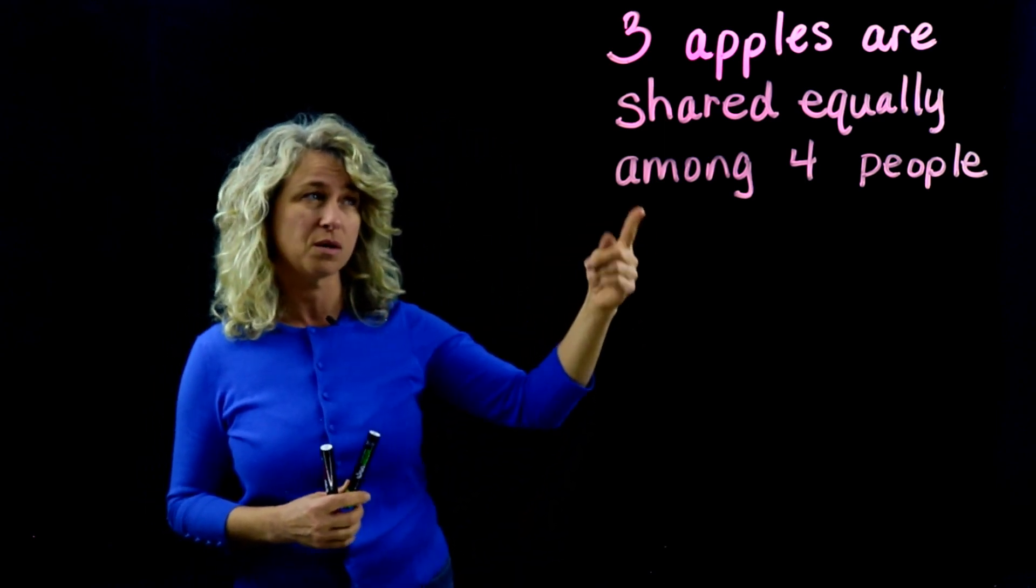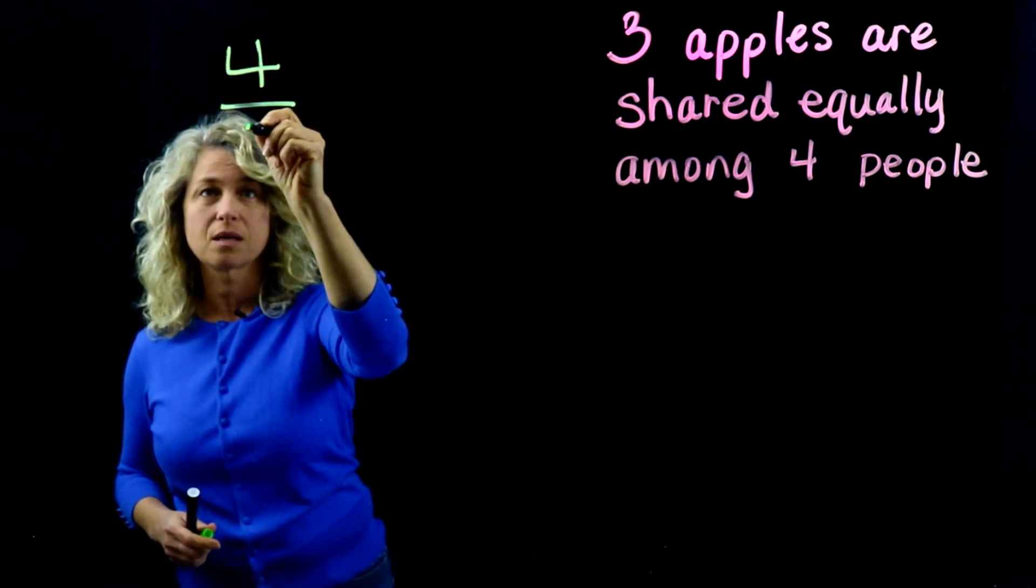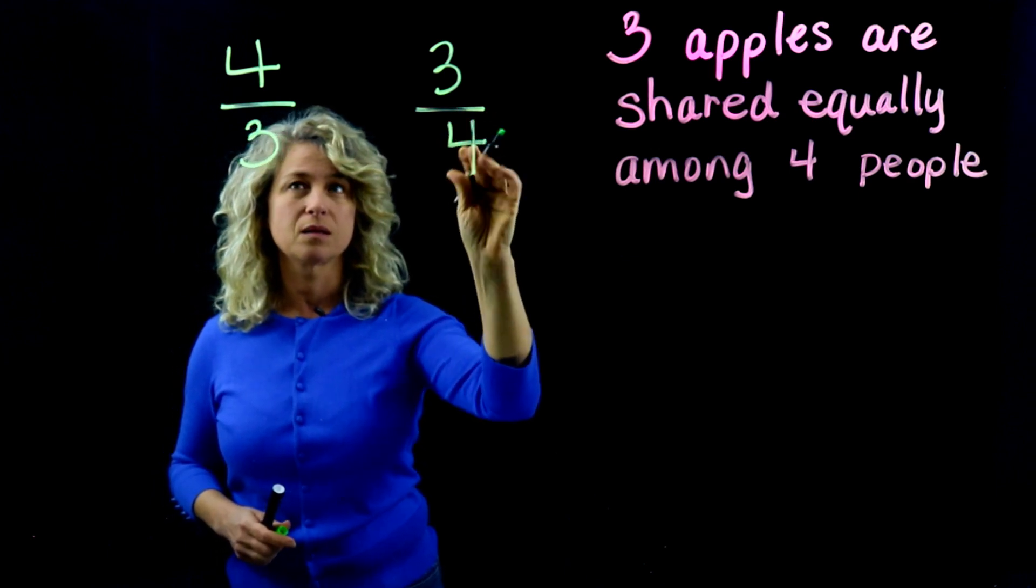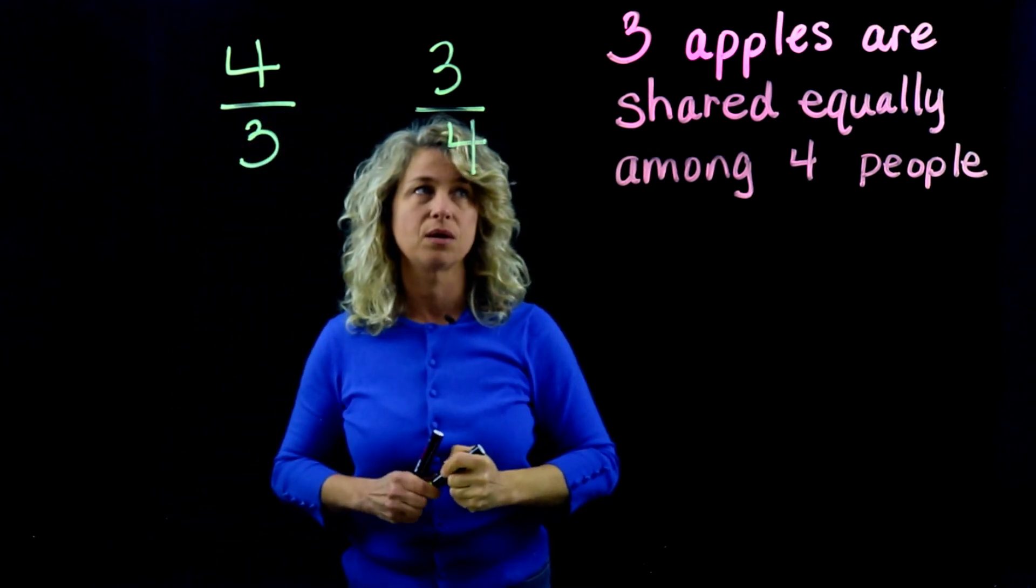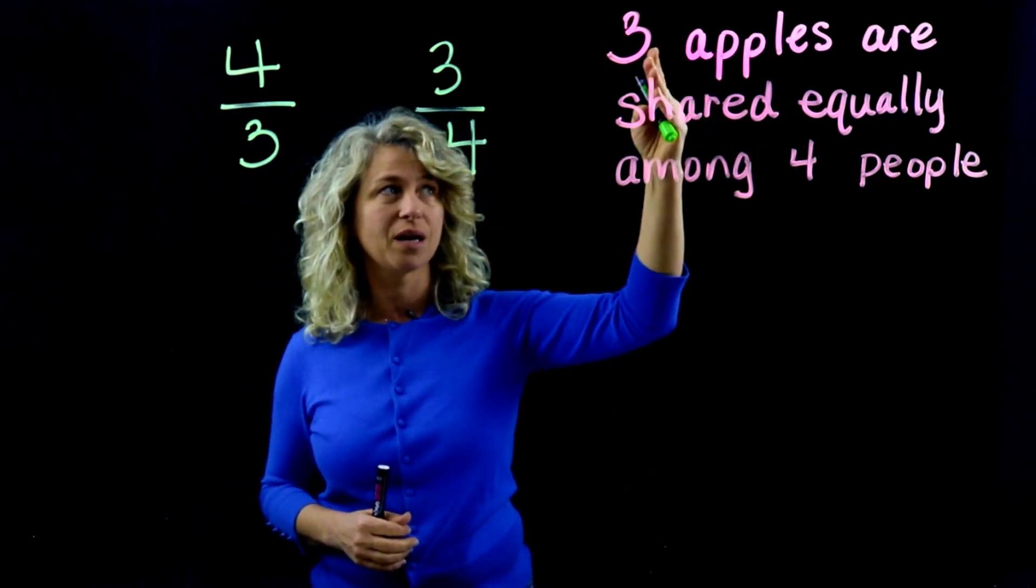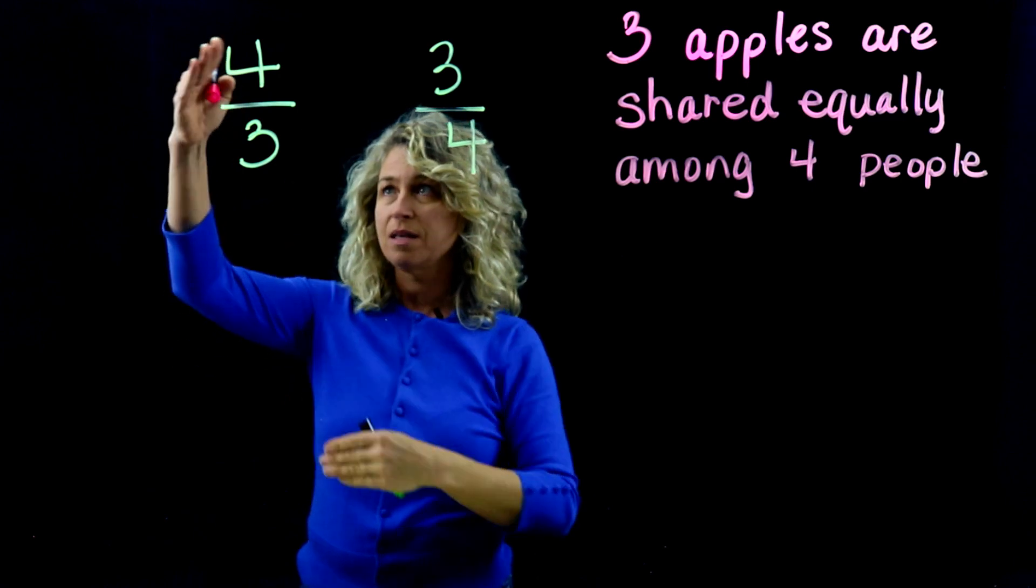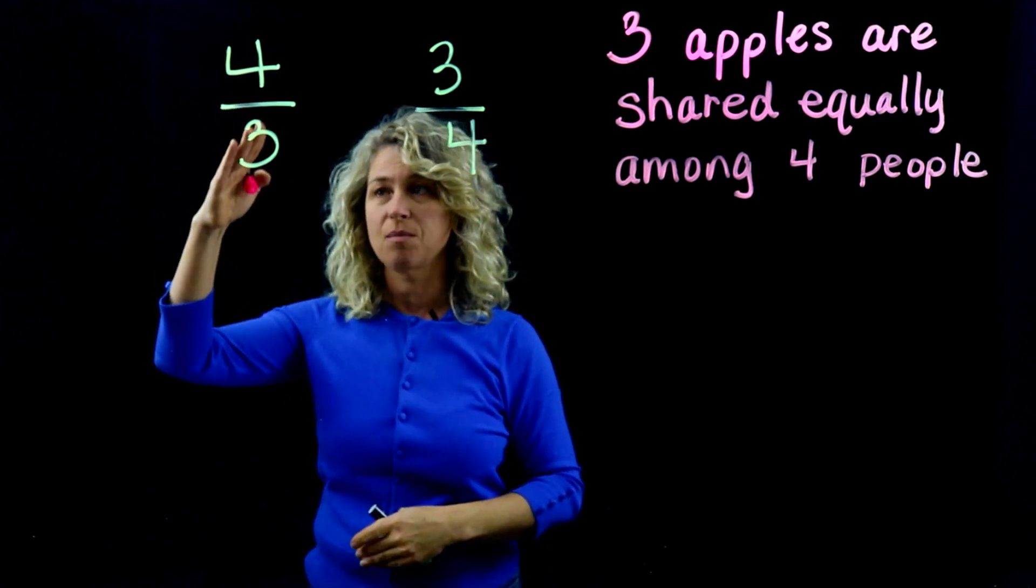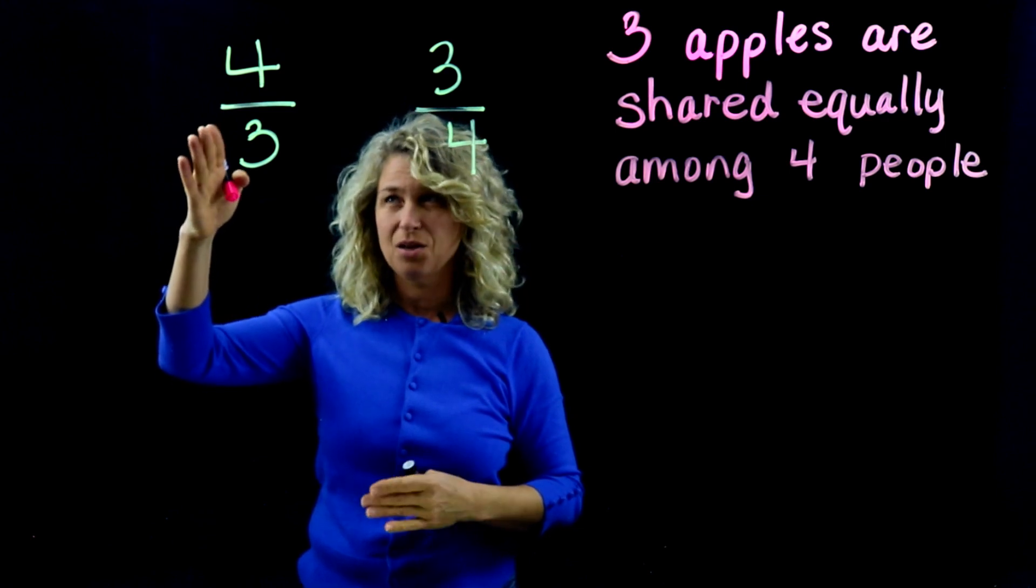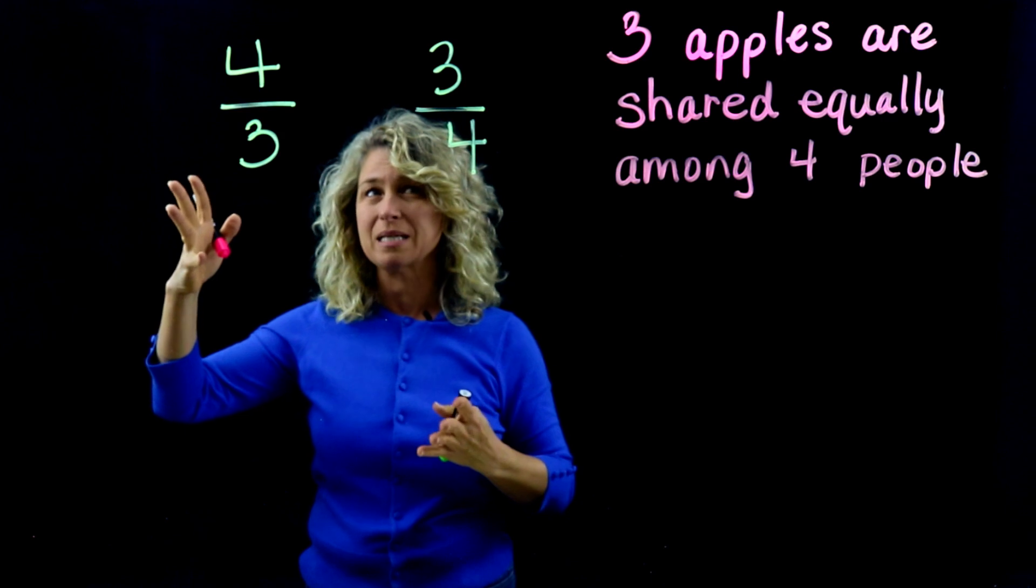Let's look and see the different options here. Let's look at the meaning of what is going on. Are we sharing the four people or are we sharing the three apples? If you write it this way, this is four people shared among three apples. Now that doesn't make sense, does it? You can't share four people; apples are not going to eat the people, so that doesn't make sense.